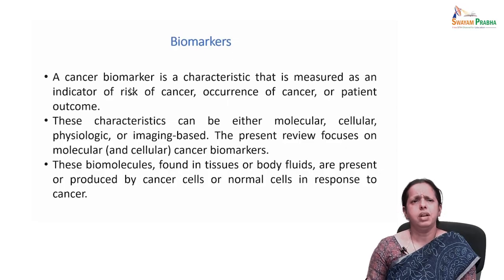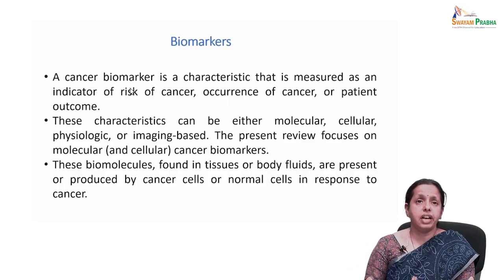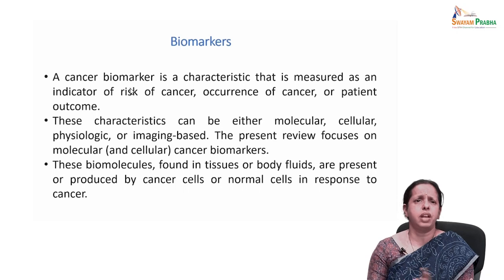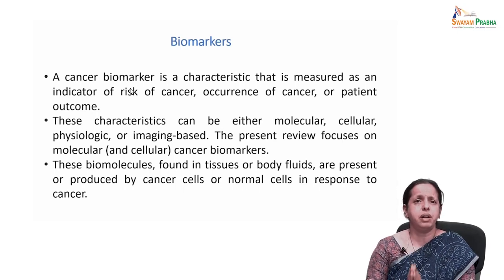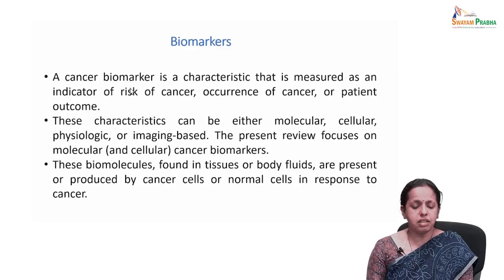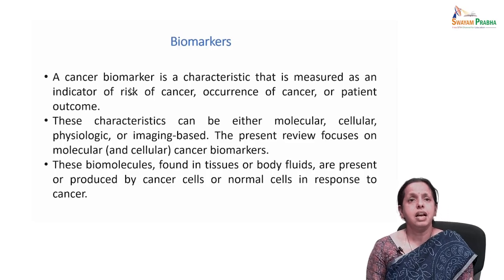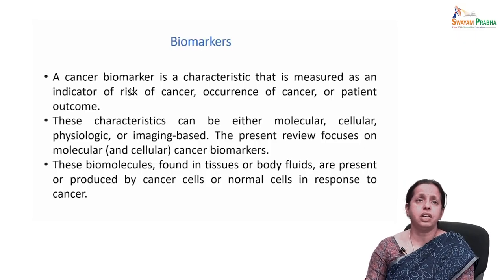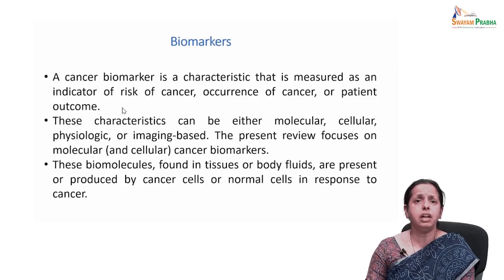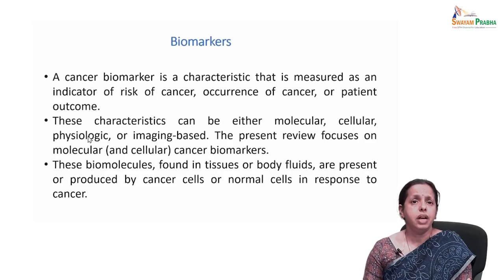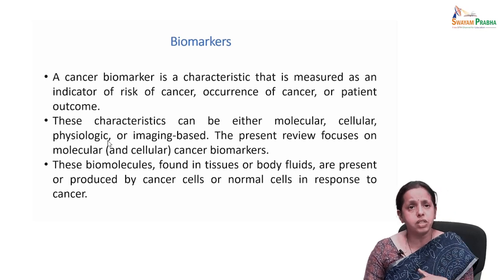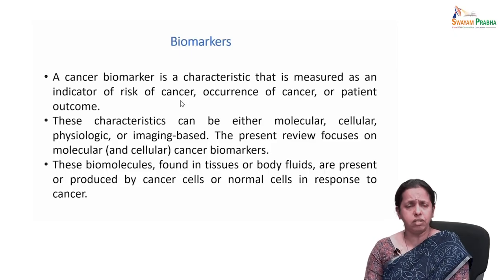What is a biomarker? It is a broadly used term — biomarkers exist for heart disease, diabetes, and many conditions. A biomarker is a characteristic measured as an indicator of cancer risk, occurrence, or patient outcome. These characteristics can be molecular, cellular, or physiological — for example, the size of a tumor can be included as a biomarker. Biomarkers are found in tissues or body fluids and are produced by cancer cells or normal cells in response to cancer.